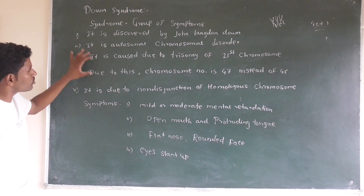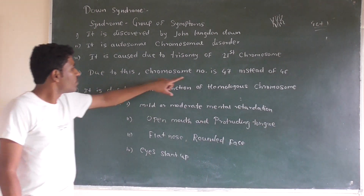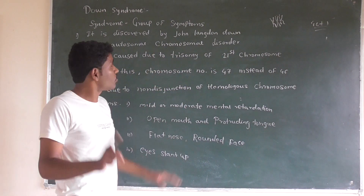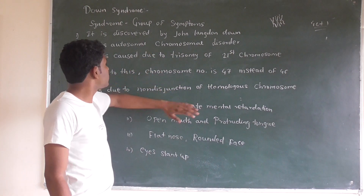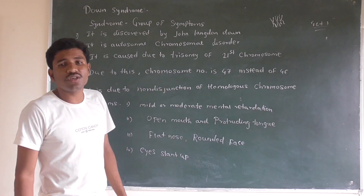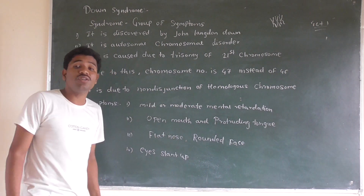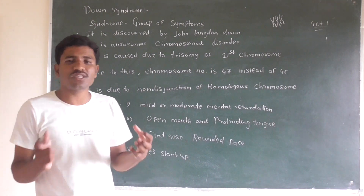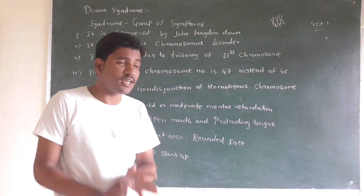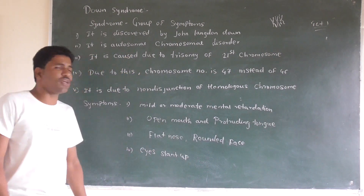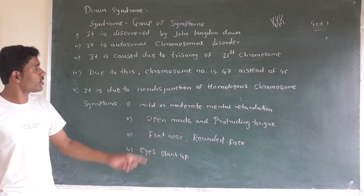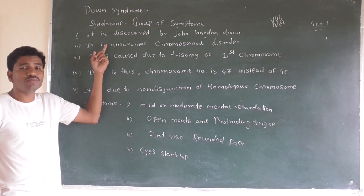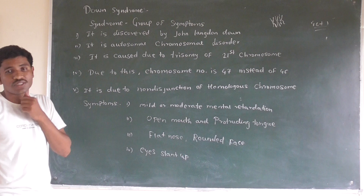In Down syndrome the chromosome number is 47 instead of 46. It is caused due to non-disjunction of the homologous chromosomes — the homologous chromosomes fail to separate, creating a trisomy condition. Down syndrome is an autosomal disease, meaning the autosomes are affected and the chromosome number changes.